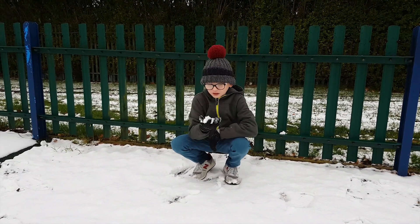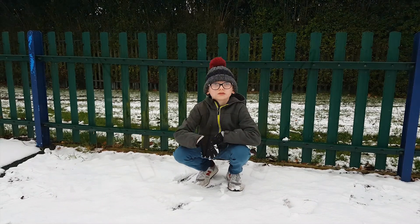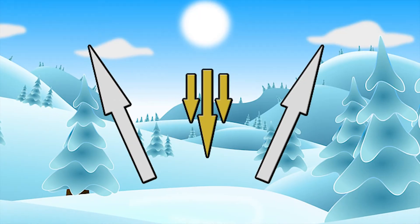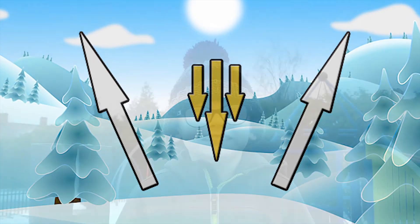Snow is not really white — it is transparent. It looks white because it pretty much reflects all the light from the sun.